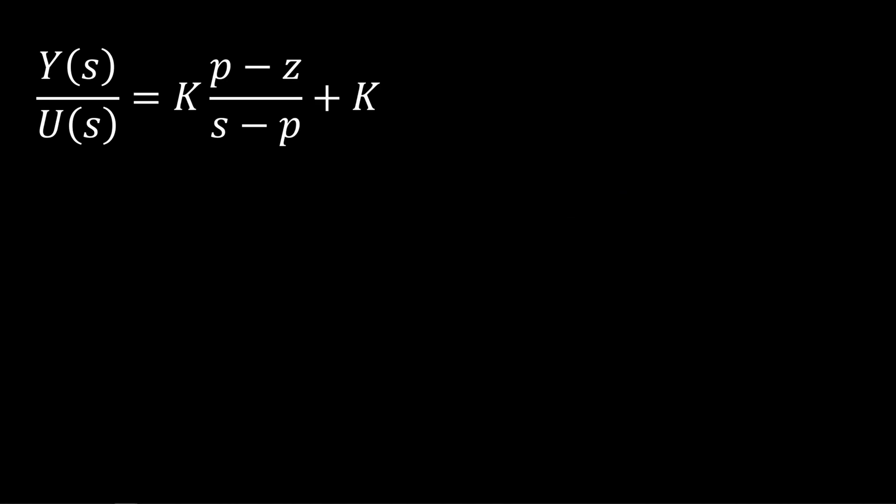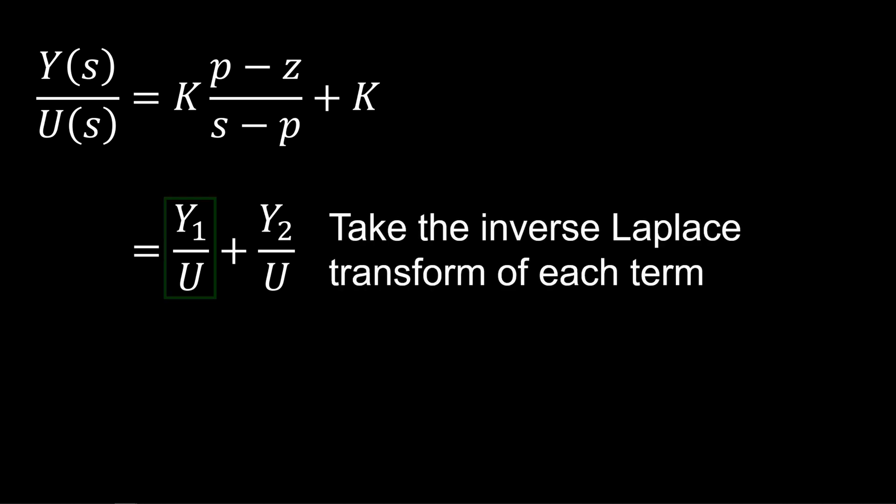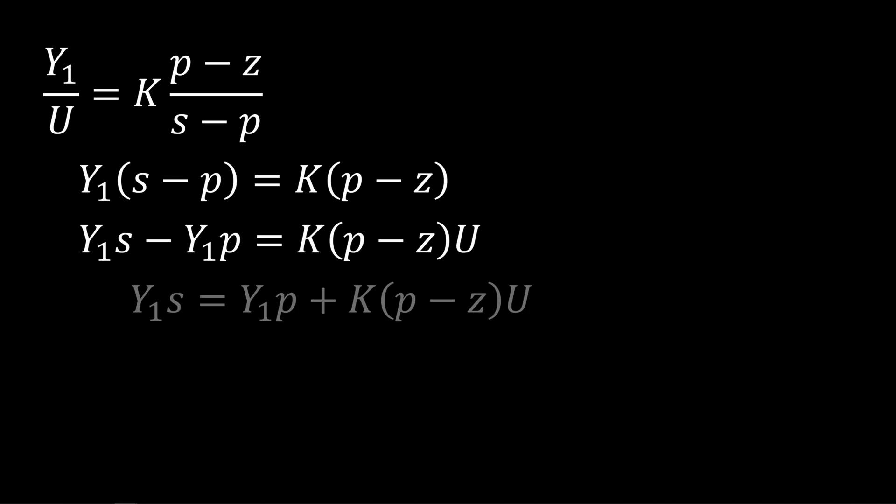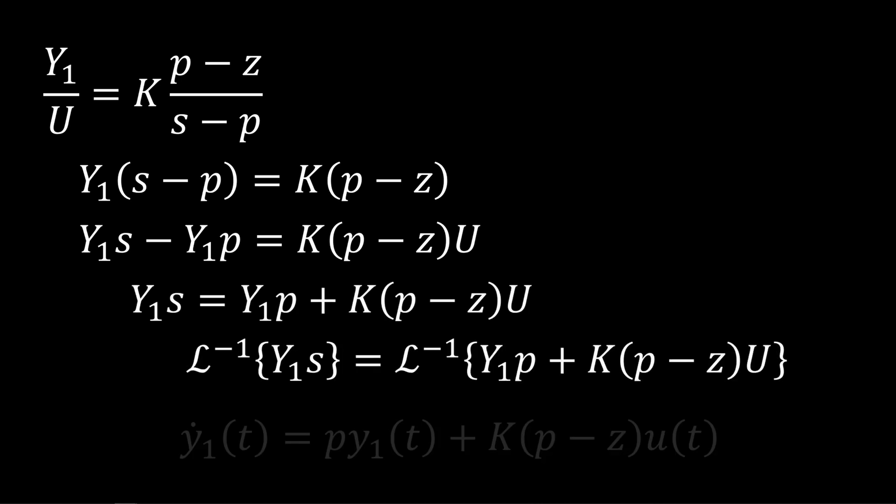Then, for the input U, each term provides an output, Y1 and Y2, respectively. So, we'll take the Laplace transform of each, starting with Y1 over U. Here's the first term, expand, transform, and get an ODE in terms of the output component, Y1.